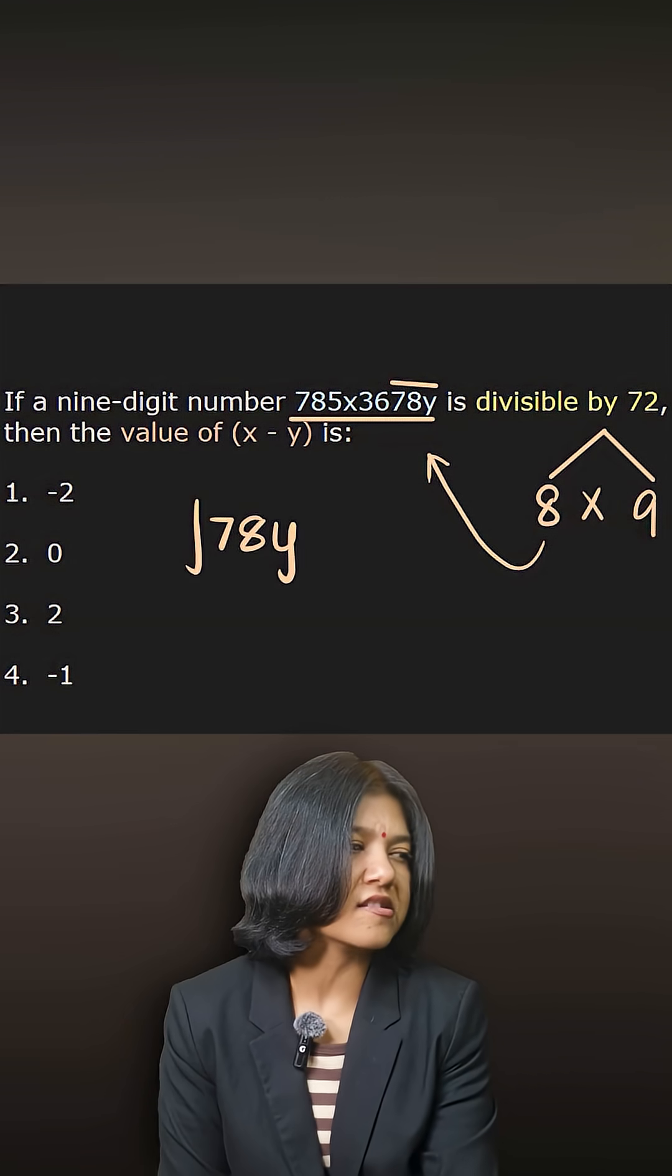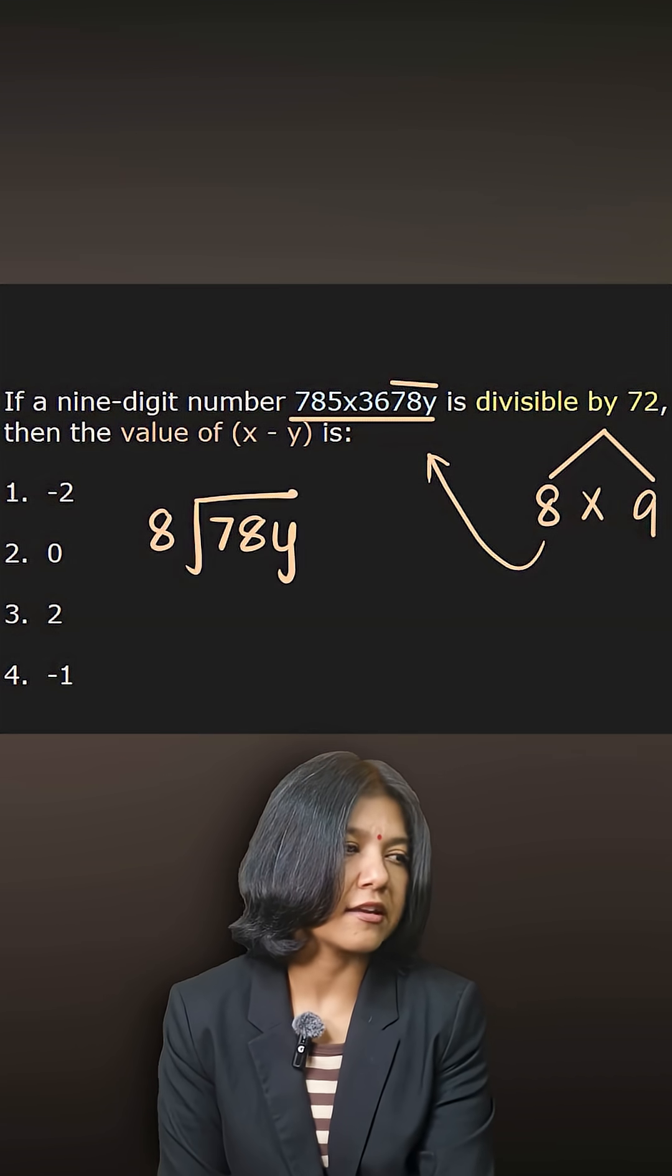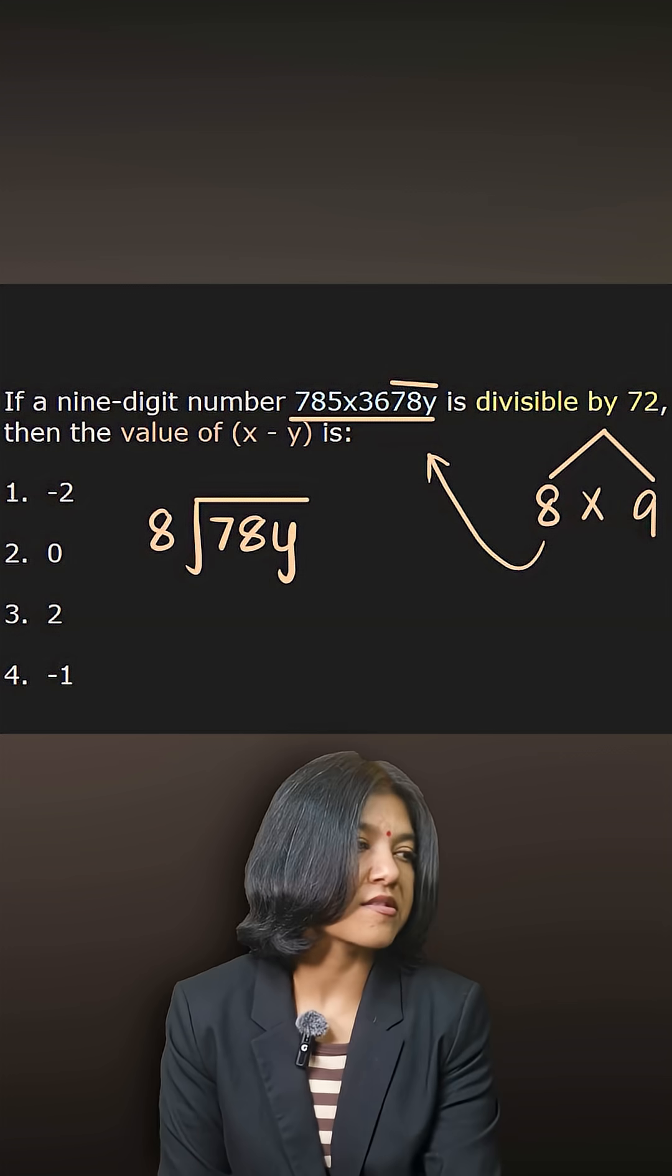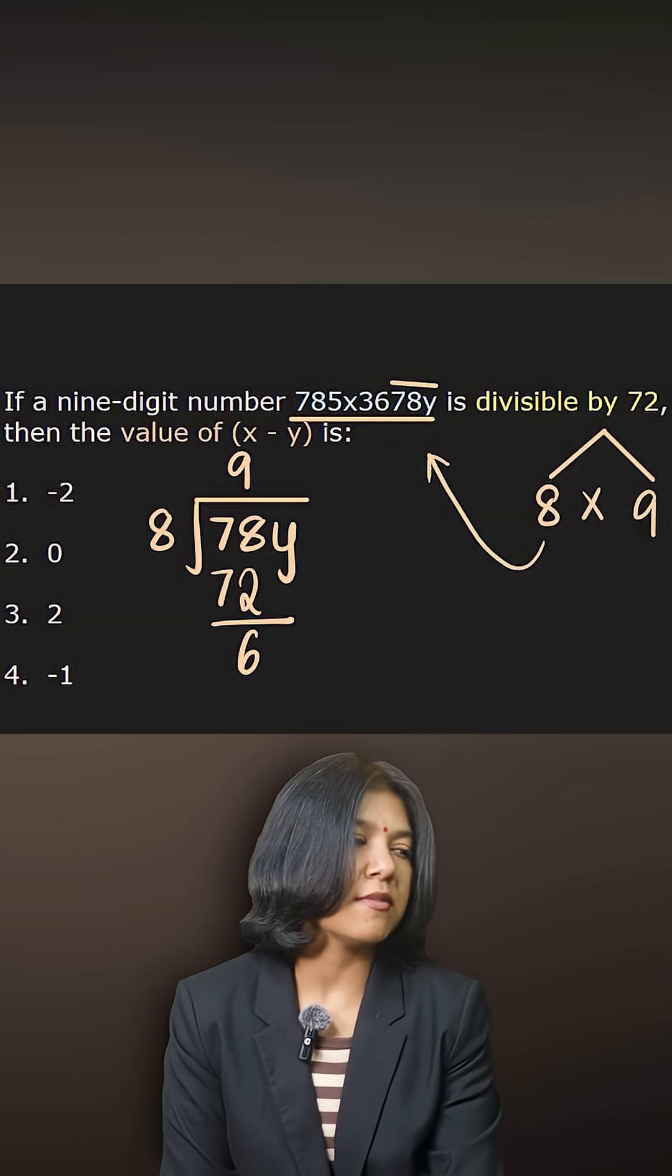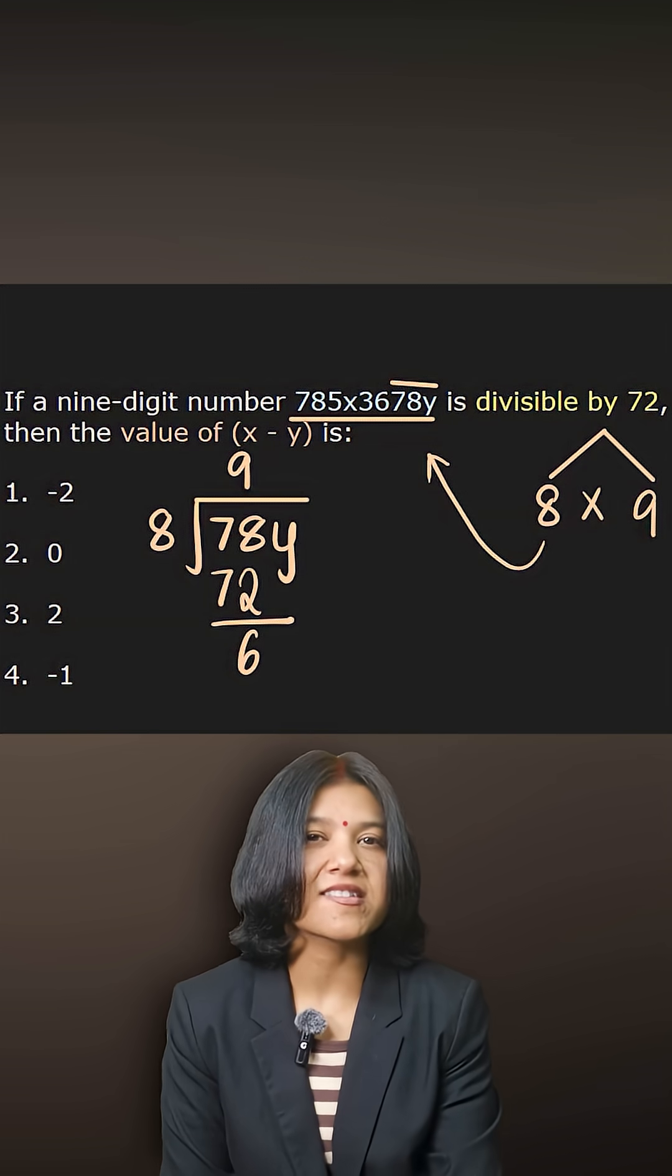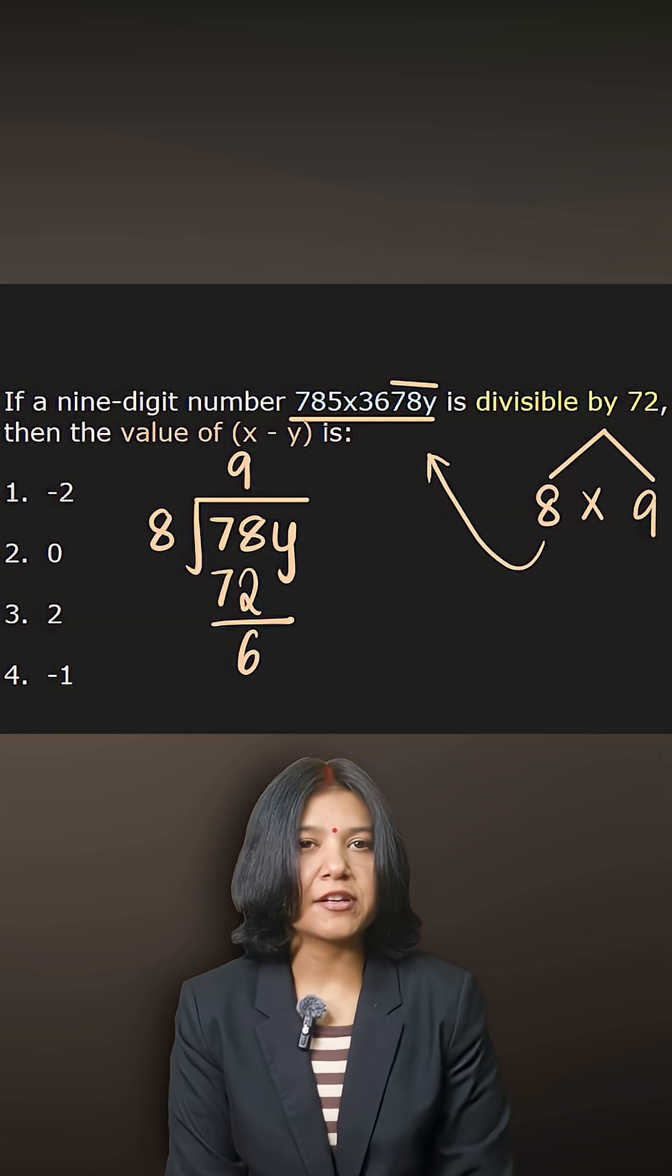So I'll just see what should be the digit y. 8 times 9 is 72, giving me 6 as the remainder. So now my number formed must be 60 something. So think about 8.